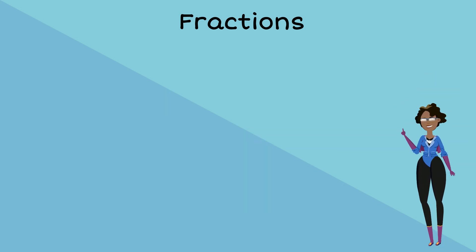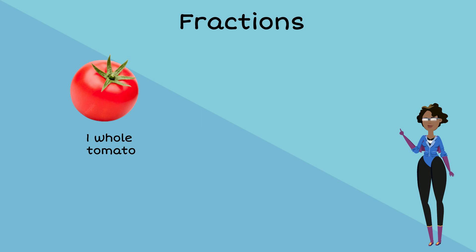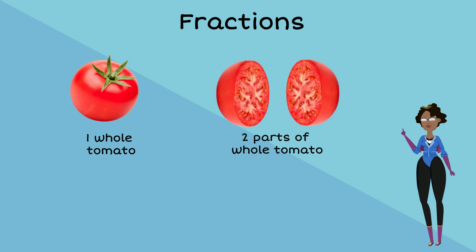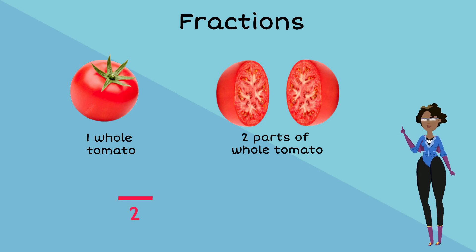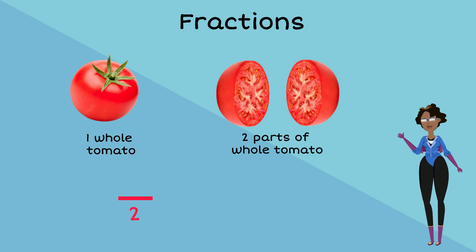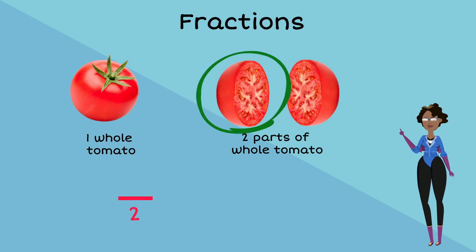Let us look at some examples. A tomato is cut into two equal parts. Each of the two parts is considered a fraction of a whole tomato. Each part is one out of the two equal parts. The two equal parts that make up the whole is our denominator.